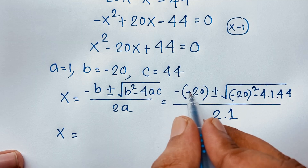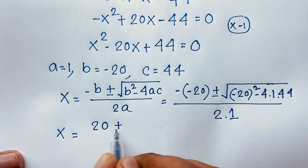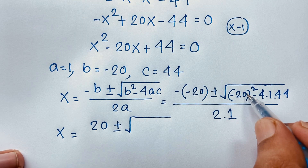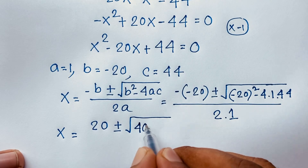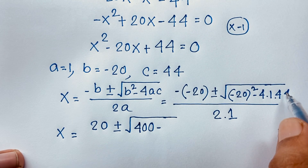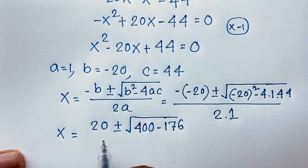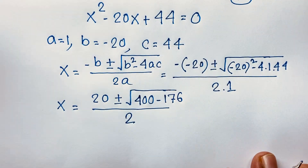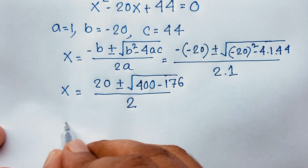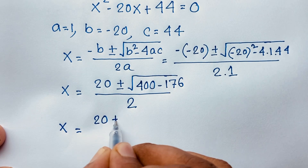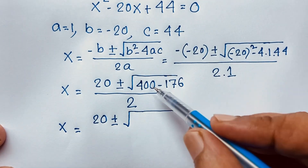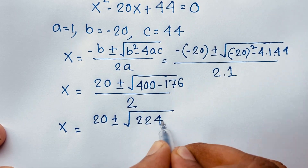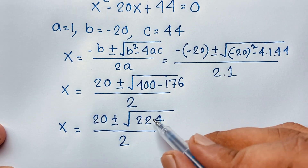Substituting in: negative of negative 20 gives positive 20, plus or minus square root of 20 squared minus 4 times 44, all over 2. Since the power is even, 20 squared is 400. Then 4 times 44 is 176. So we have 20 plus or minus square root of 400 minus 176, over 2. That gives square root of 224 over 2.